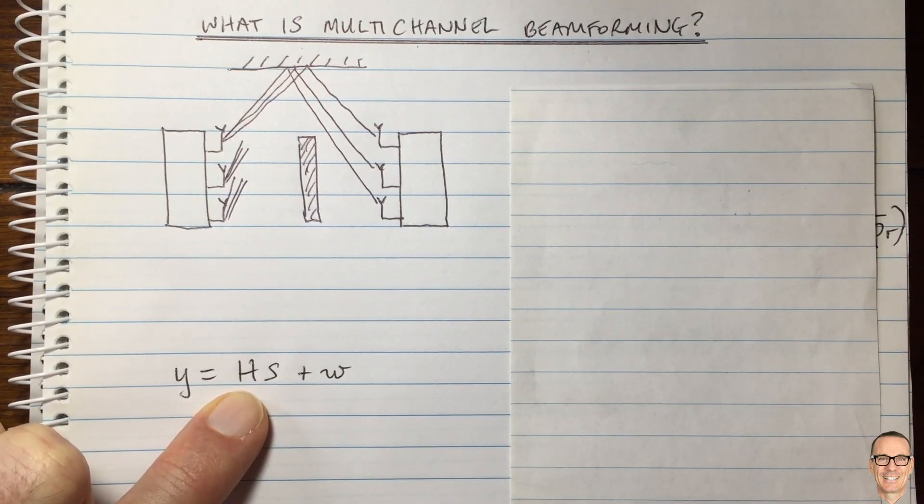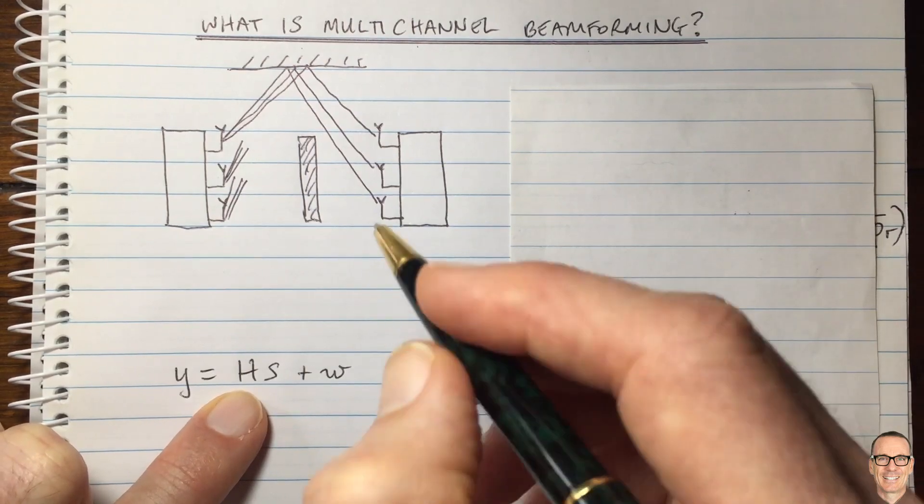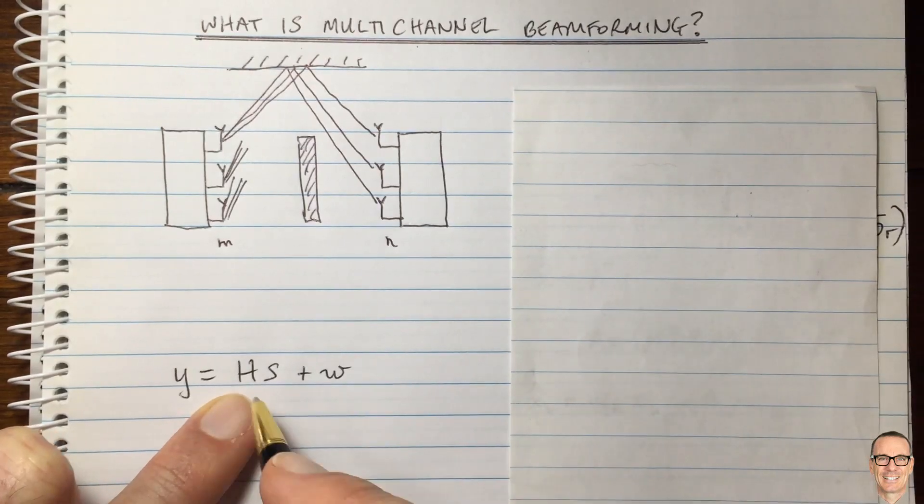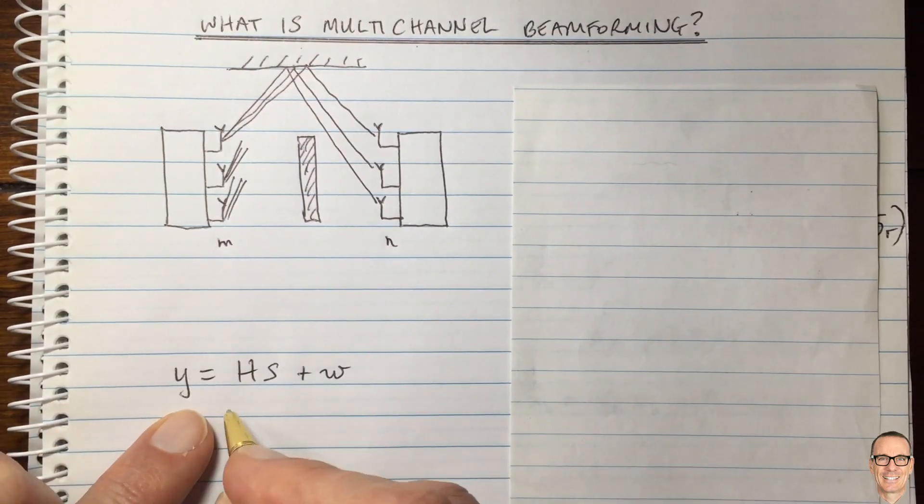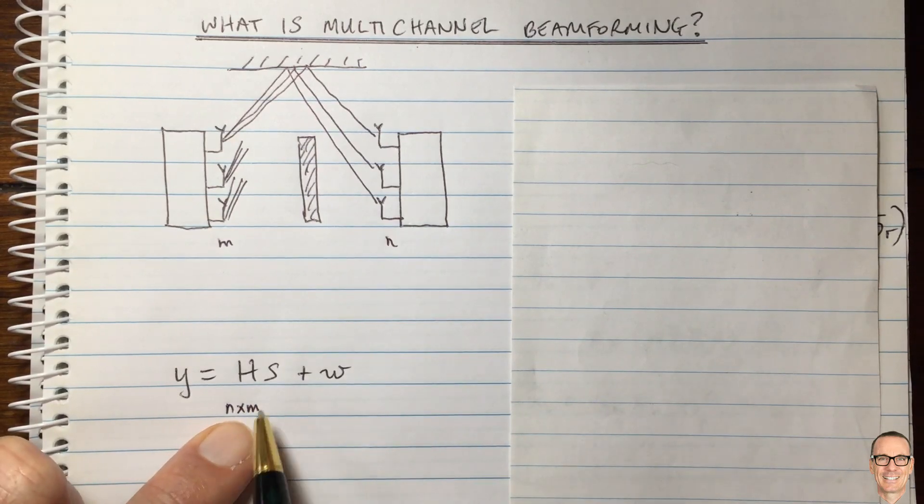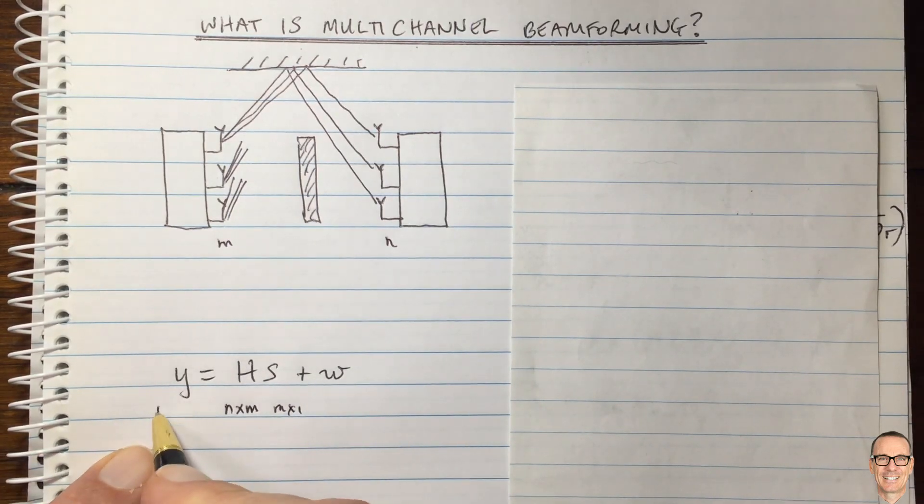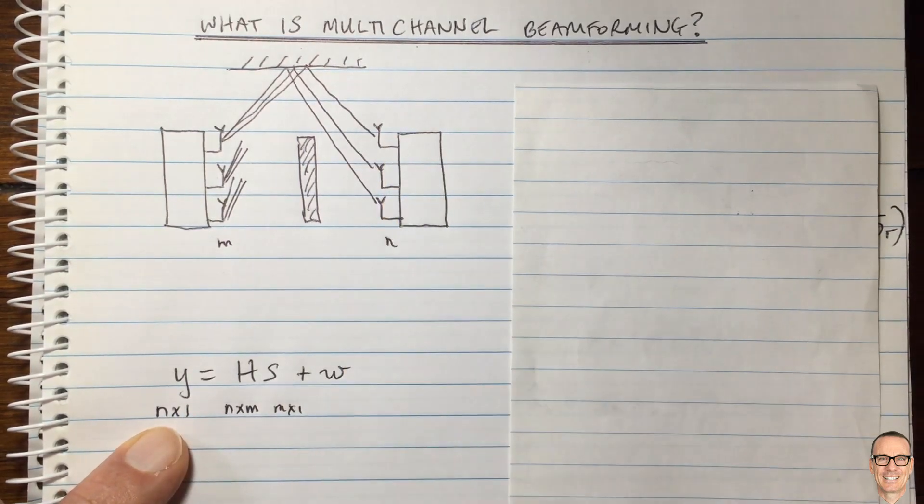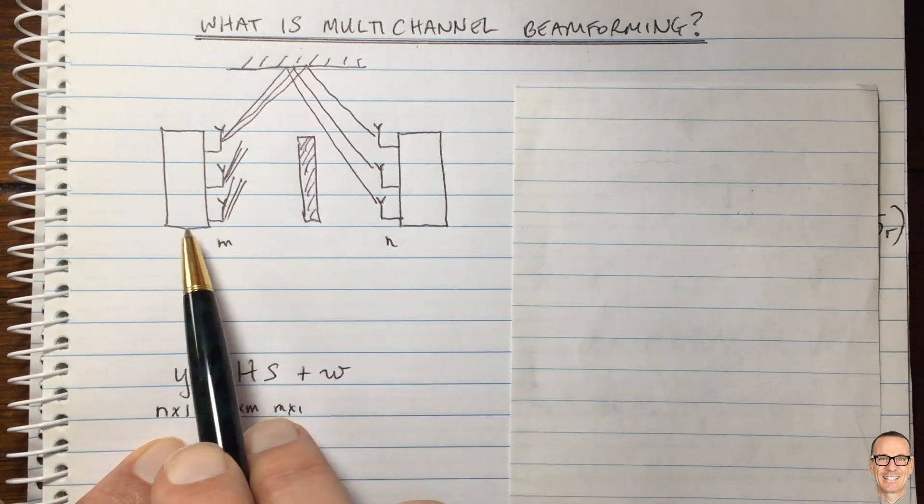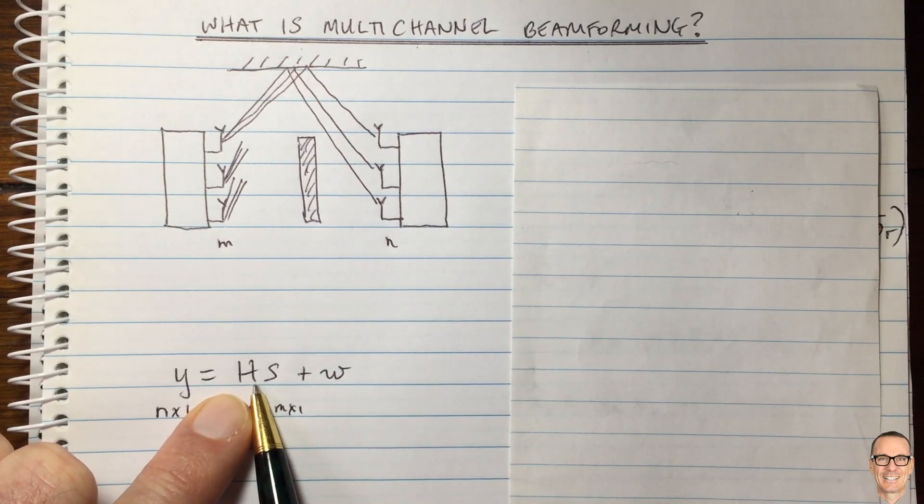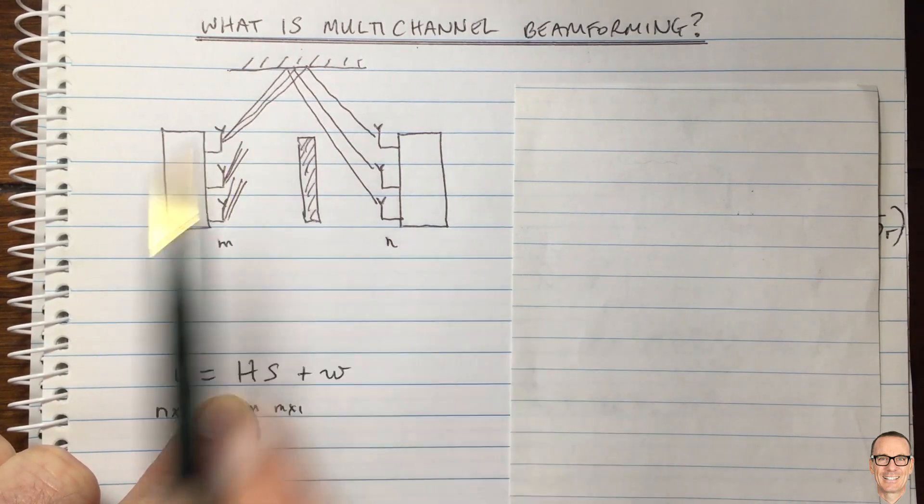But in general, if we have m transmitting antennas and n receiving antennas, then we would have a matrix H which is n by m. It means you have m different signals, so this would be m by one is the s vector, and you would be receiving n different symbols, which is n by one vector at the receiver. This is a matrix equation which represents this channel scenario, where the elements of H are complex numbers representing amplitudes and phases.